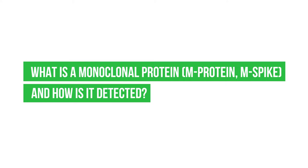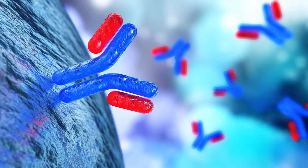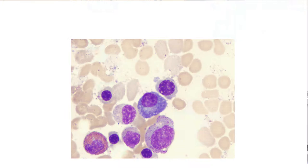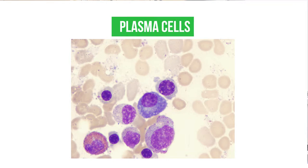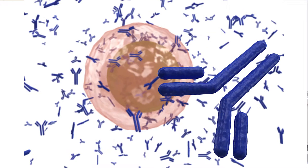What is a monoclonal protein, or an M protein, or an M spike, and how is it detected? That's actually a question I get asked in the clinic almost all the time. This is a protein that we can detect in the blood, but it really derives from something called an antibody. Myeloma at its core is a cancer of plasma cells, and plasma cells are the body's natural factory for antibodies.